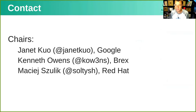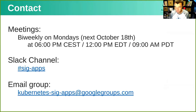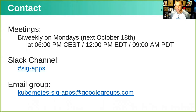Janet, Ken, and myself — we are the chairs of SIGApps. We are meeting every other Monday. Our next meeting will be on October 18th. The call is happening at 6 p.m. Central European time, at noon Eastern time, or 9 a.m. Pacific time. We also hang out on the Kubernetes Slack channel — SIGApps is the channel, as you might expect. And we also maintain an email group, so you can always reach out to us and we will be able to answer your questions.